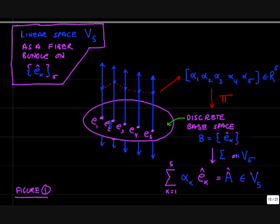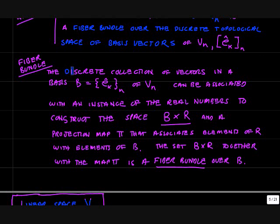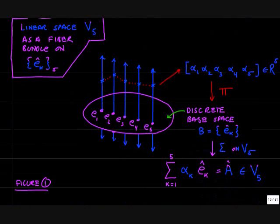Because we have a vector sum on elements of V5, we can write the sum of the products of the alphas and the basis vectors as a vector in V5. This is called a fiber bundle. The fibers are these instances of the real numbers, and the base space is the discrete set of five basis vectors e_k. Formally: the discrete collection of vectors in a basis B of Vn can be associated with instances of the real numbers to construct the Cartesian product B cross R. If we then define a projection map pi that associates elements of R with elements of B, then the set B cross R together with the map pi is called a fiber bundle over the set of points B.